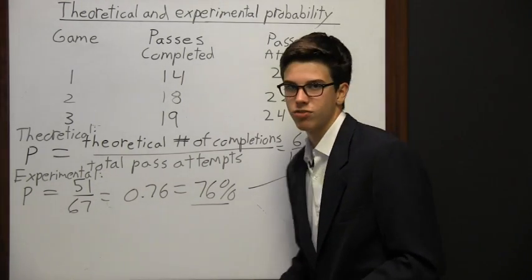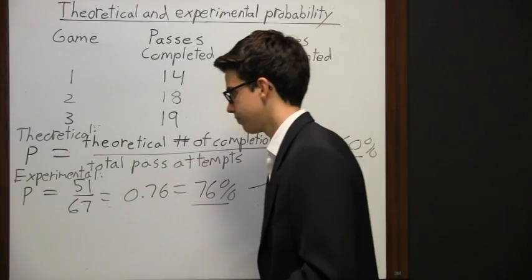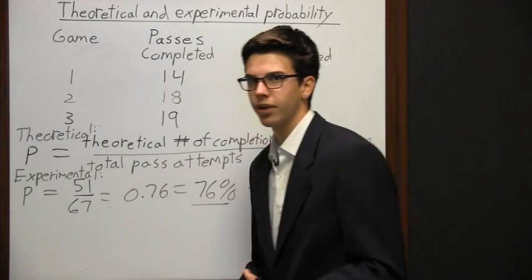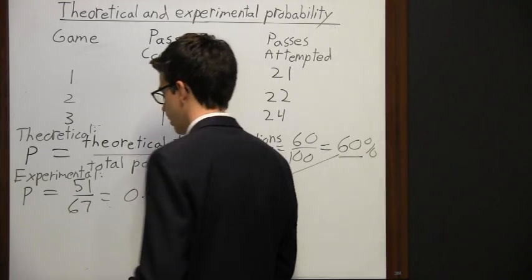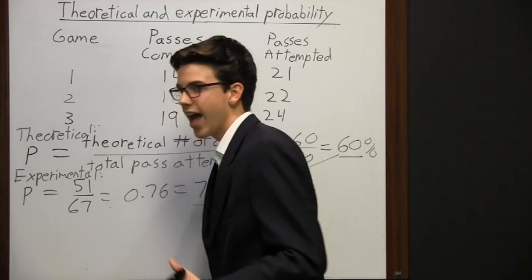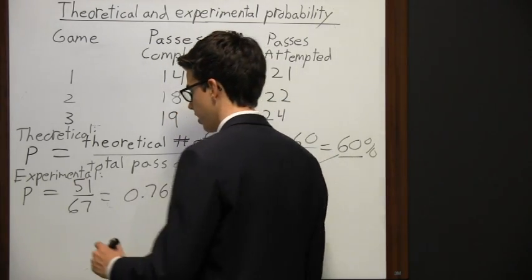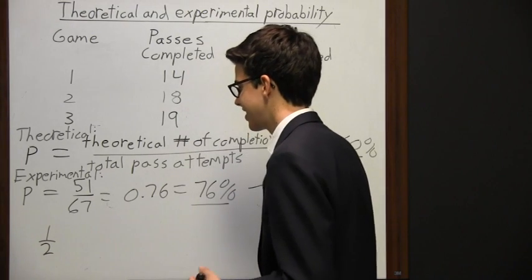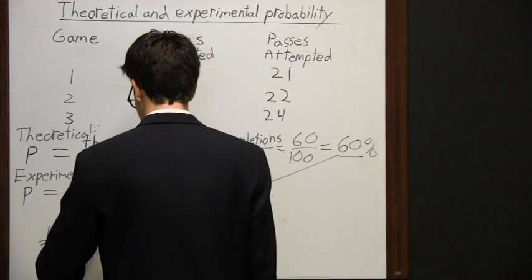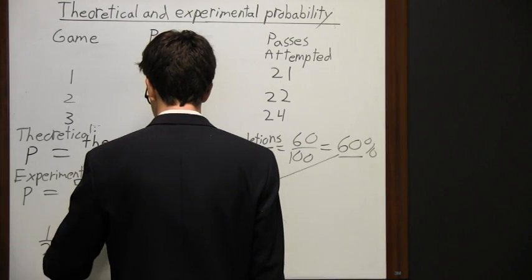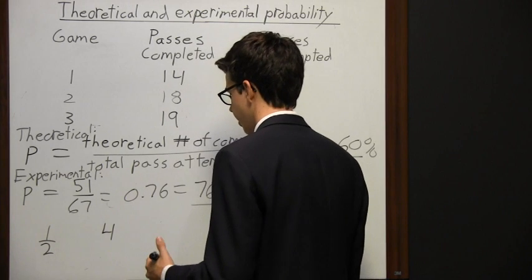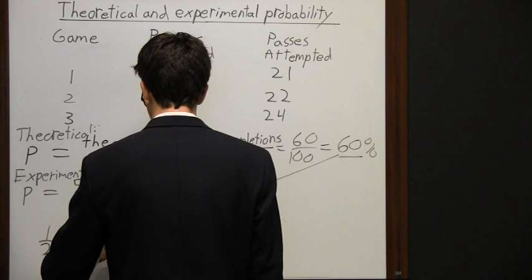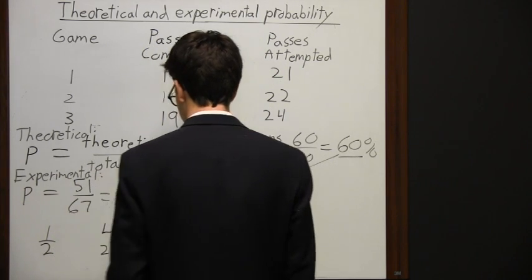Another example of this would be flipping a coin. The probability of landing on heads when flipping a coin is one half. Say you flip a coin six times — four times it lands on heads and twice it lands on tails.